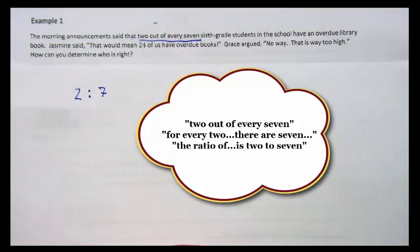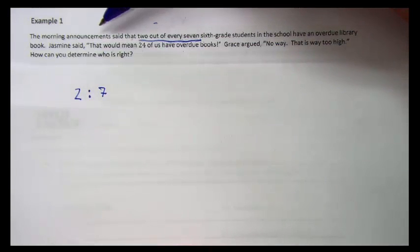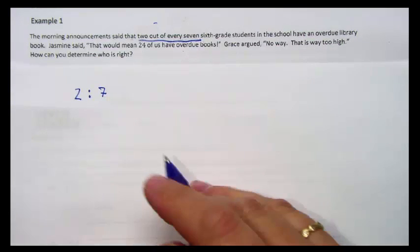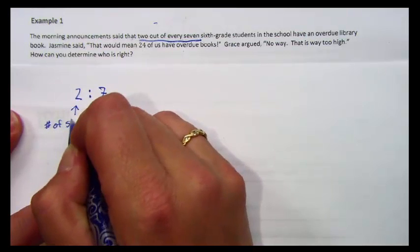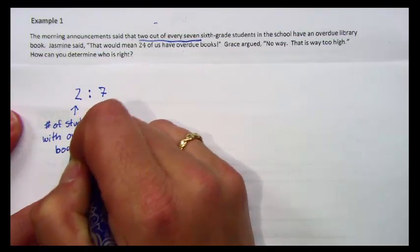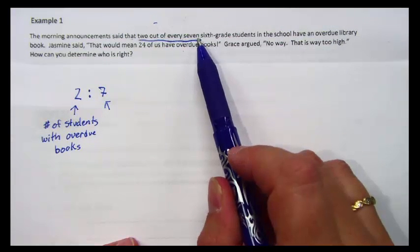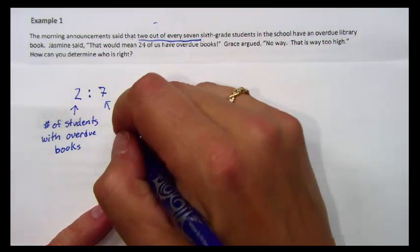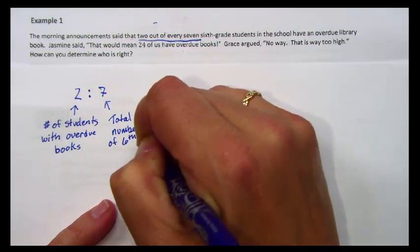One of the tricks is to figure out what the two represents and what the seven represents. If we read that sentence again, the morning announcement said that two out of every seven sixth grade students in the school have an overdue library book. The two goes with the number of students with overdue library books. The seven out of every seven. That means if we took the total number of sixth graders and broke them into groups of seven, two out of every seven would have overdue library books. So the seven is the total number of sixth grade students.